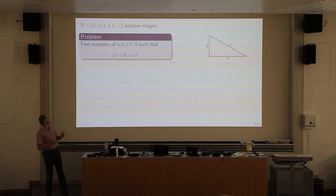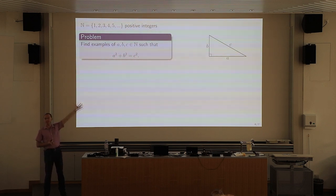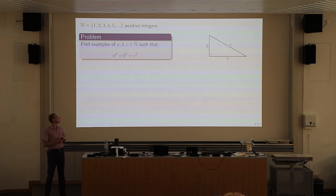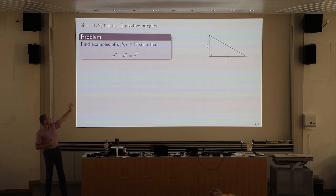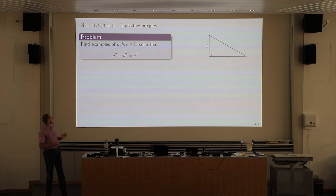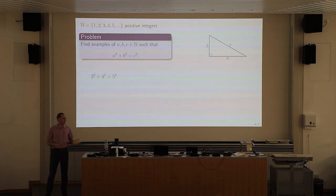Take the set of positive integers: 1, 2, 3, 4, 5, and so on — no zero, no negatives, no fractions, no square roots. Generate examples of a, b, and c — positive integers — satisfying the Pythagorean equation a² + b² = c². In other words, give me examples of right triangles whose sides are all integers. [Student: 3, 4, 5.] Absolutely — 3² + 4² = 5². You're all familiar with this.